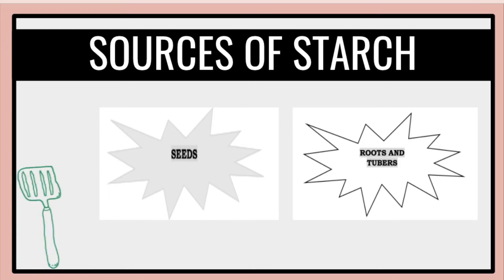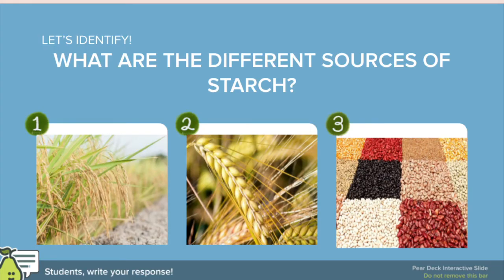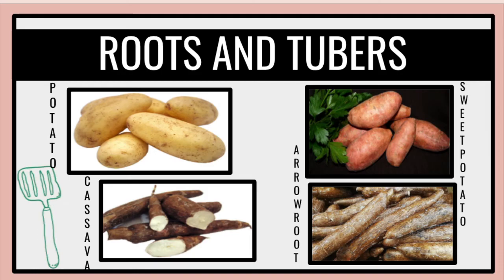These are the sources of starch. We have seeds, roots, and tubers. The different sources of starch include: number one, sorghum or cereals; then we have corn and oats. We also have number three, arrowroot — arrowroot is a starch obtained from the rhizomes of several tropical plants. We also have oats and rice. For roots and tubers, we have potato, cassava, sweet potato, and arrowroot.